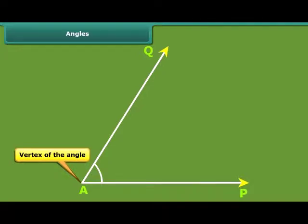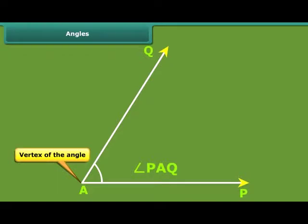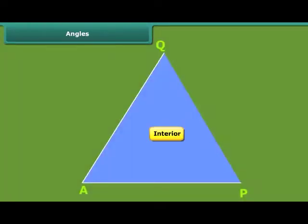An angle is named as angle PAQ. Note that the vertex specifying the angle is written as the middle letter. In the figure shown, the interior and the exterior of the angle is denoted by different colors.